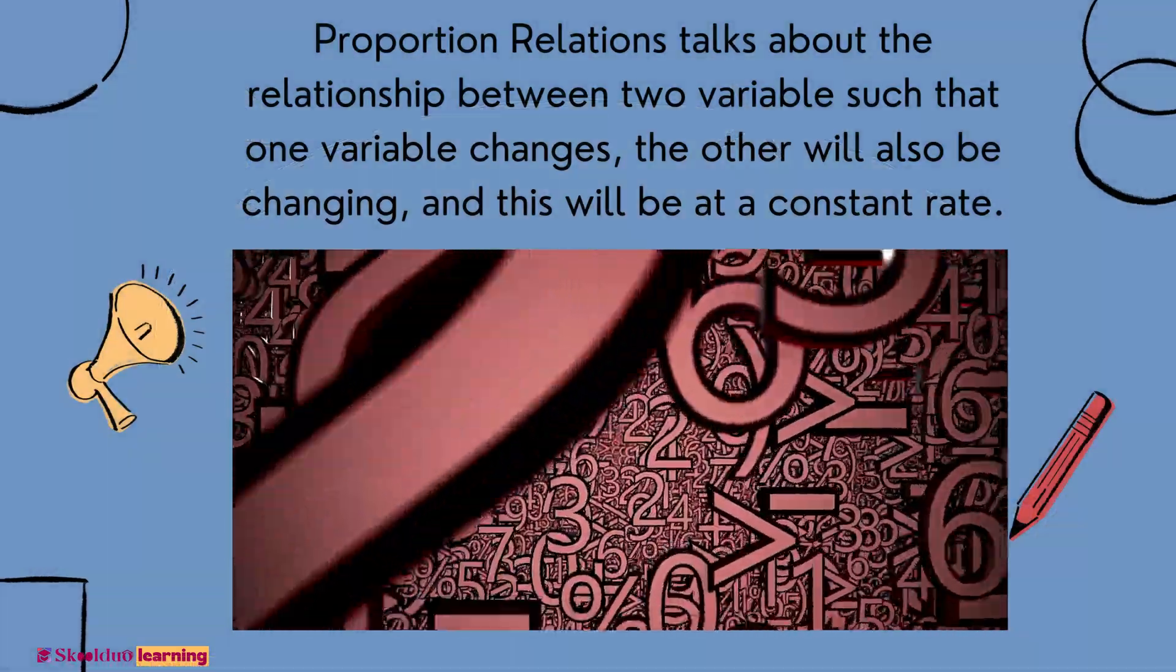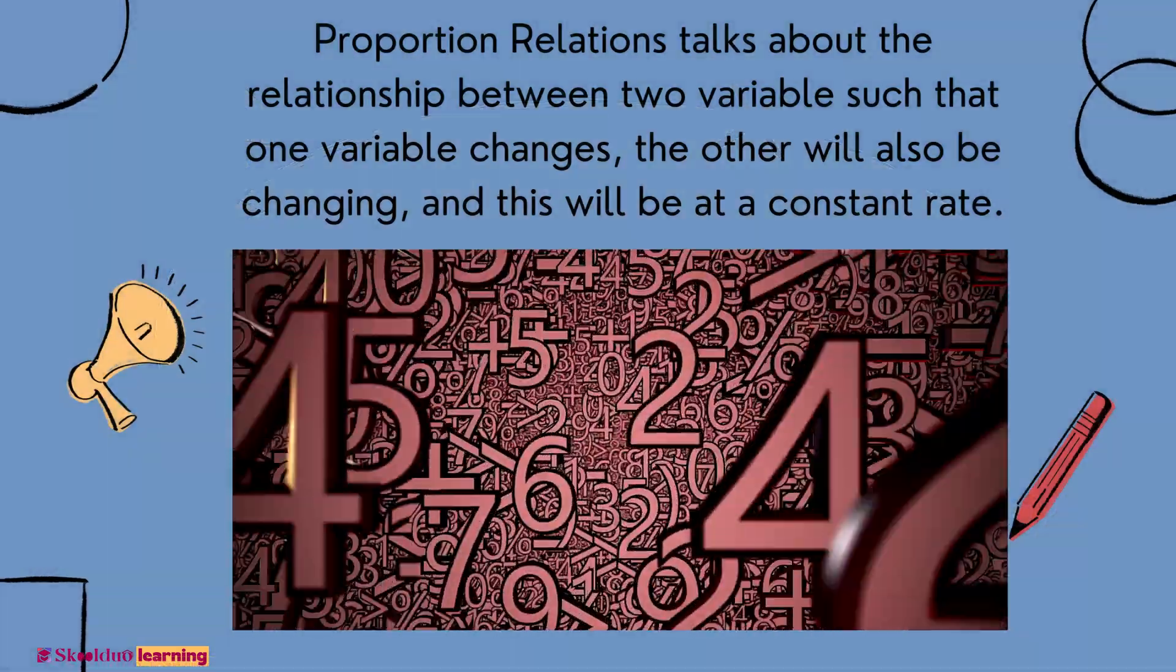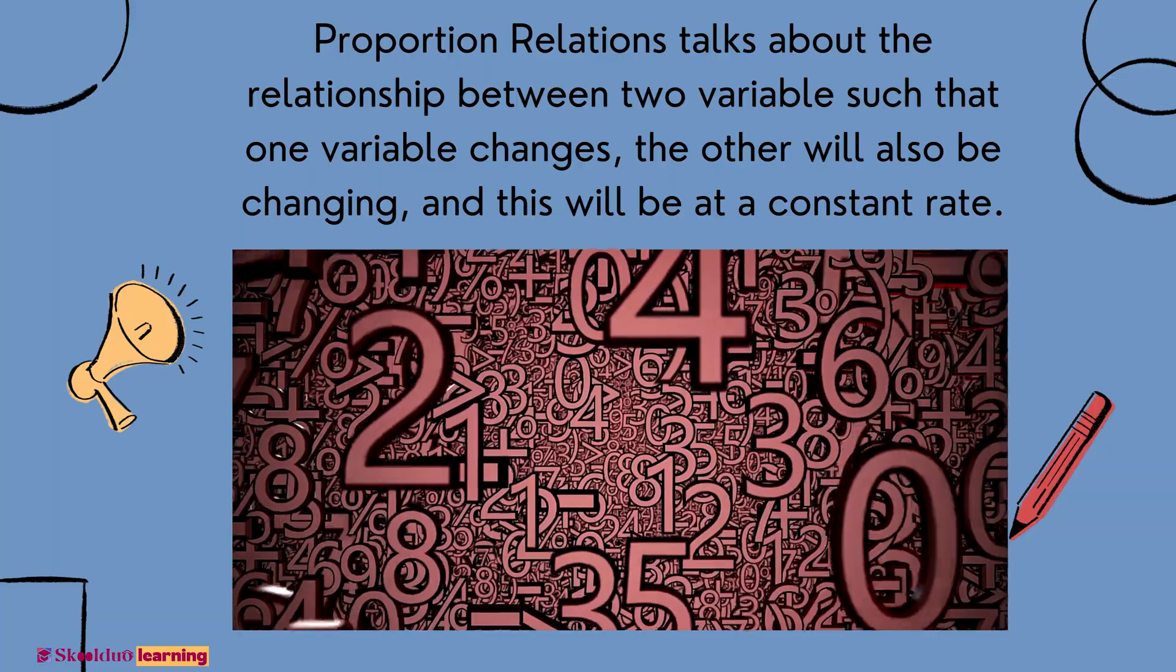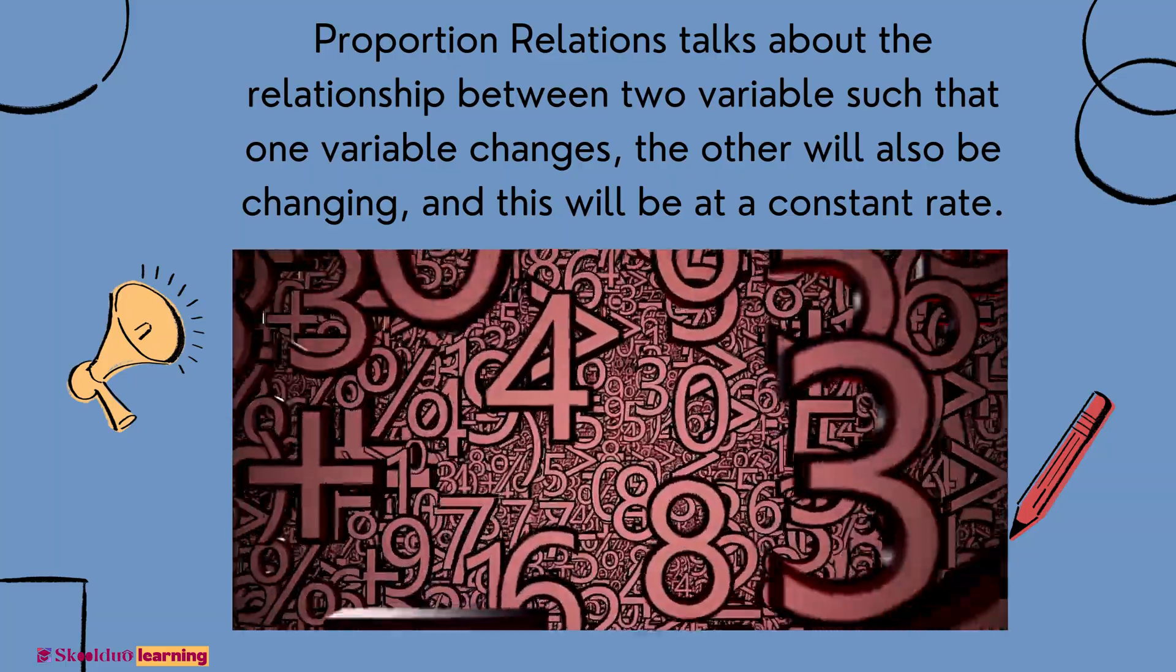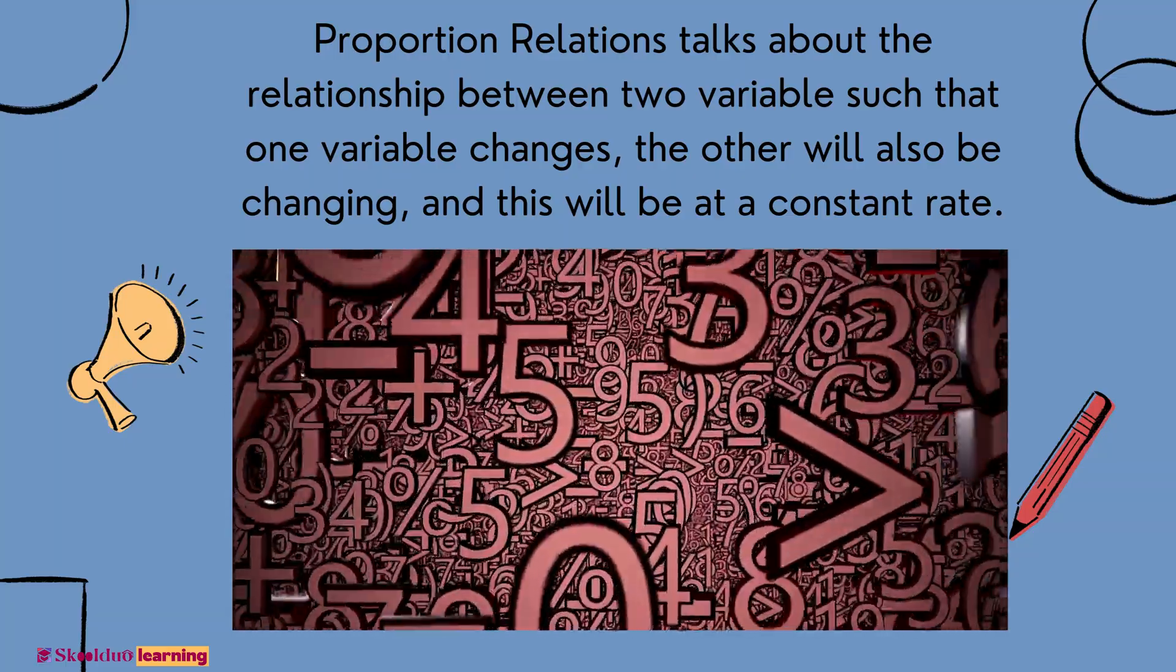Proportional Relationships talks about the relationship between two variables, such that one variable changes, the other will also be changing, and this will be at a constant rate.